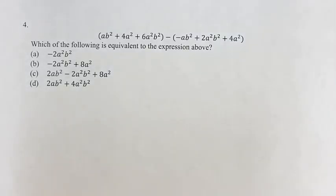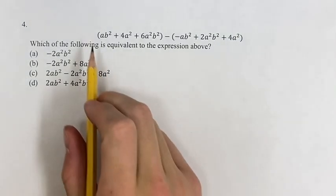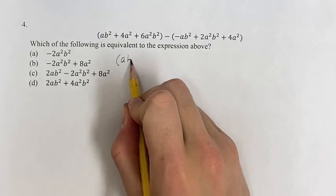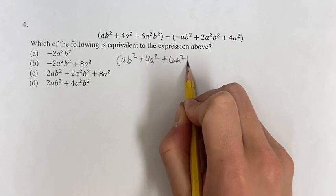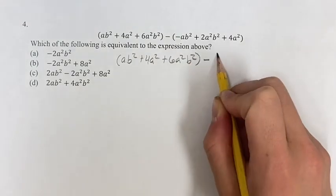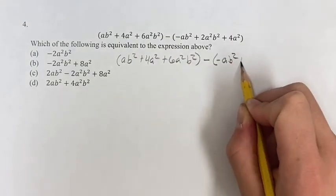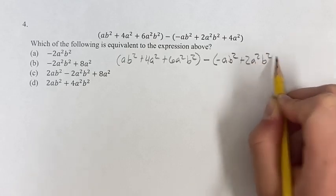Hello and welcome back to another video. In this problem, we're given the expression ab² + 4a² + 6a²b², and this is minus (-ab² + 2a²b² + 4a²).